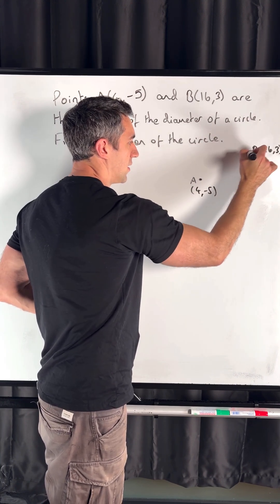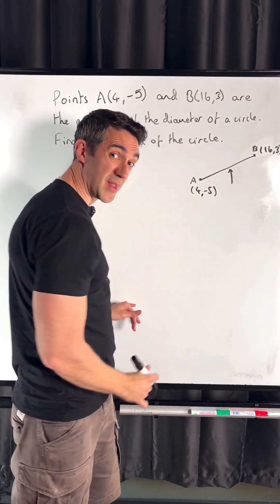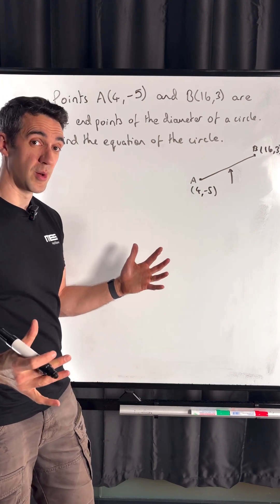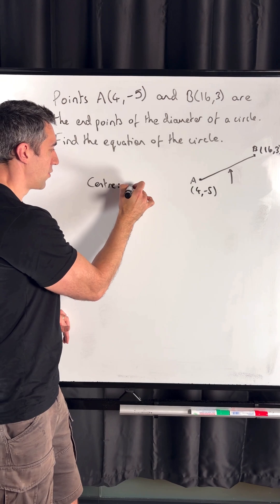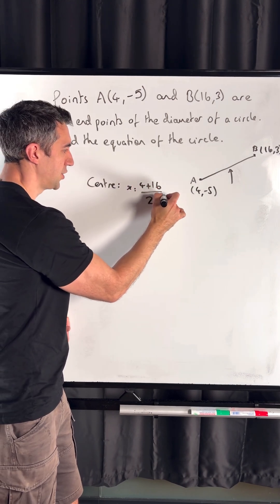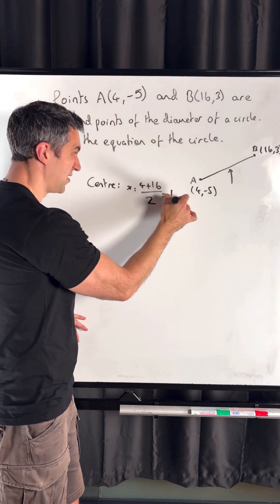The center of the circle is at the midpoint of AB. Applying the midpoint formula: for x, (4 + 16)/2 = 20/2 = 10, nice and easy.